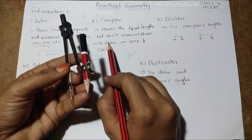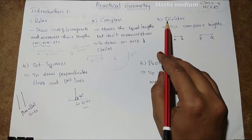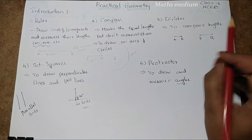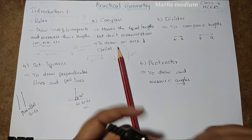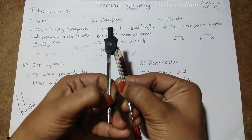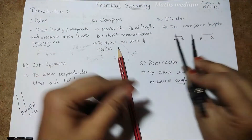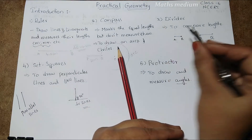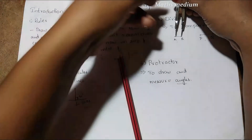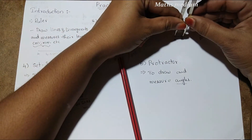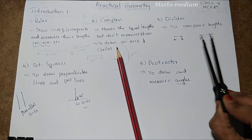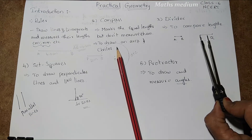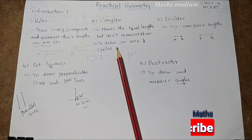Next, coming to the divider — to compare lengths. Here I already told you about AB and PQ, these two line segments. This is the divider; we can extend it. Now see AB measurement and then measure PQ — PQ is more than half, so PQ is greater than AB. That is the purpose of the divider: to compare lines.